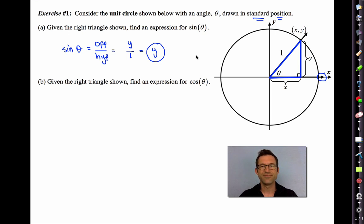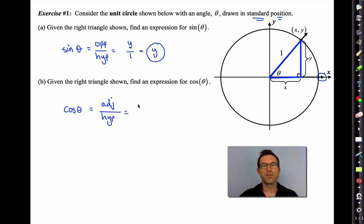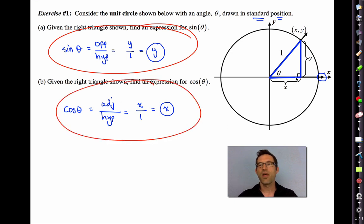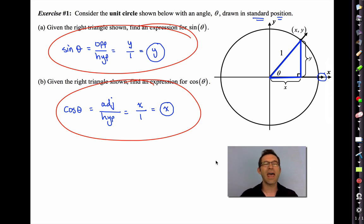Now let's do the same thing for letter B — we want an expression for cosine theta. Cosine theta will be the adjacent side divided by the hypotenuse. The adjacent side is the x-coordinate, divided by the hypotenuse which is one. And that just gives us the x-coordinate. I cannot possibly emphasize enough how amazingly important these two facts are. They define the sine and cosine ratios and are the two most useful things in all of trigonometry.